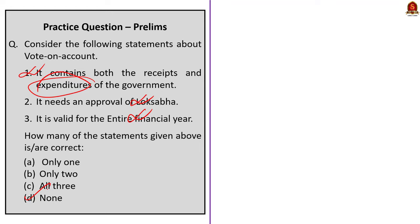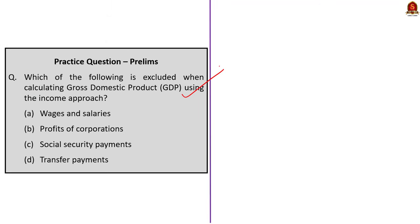The next question asks which of the following is excluded when calculating GDP using the income approach. The correct answer is transfer payments. While using the income approach to calculate GDP, transfer payments like social security payments are excluded because they do not represent payment for goods or services produced. If they were included, it would lead to double counting — for that reason only, they are not included while calculating GDP.